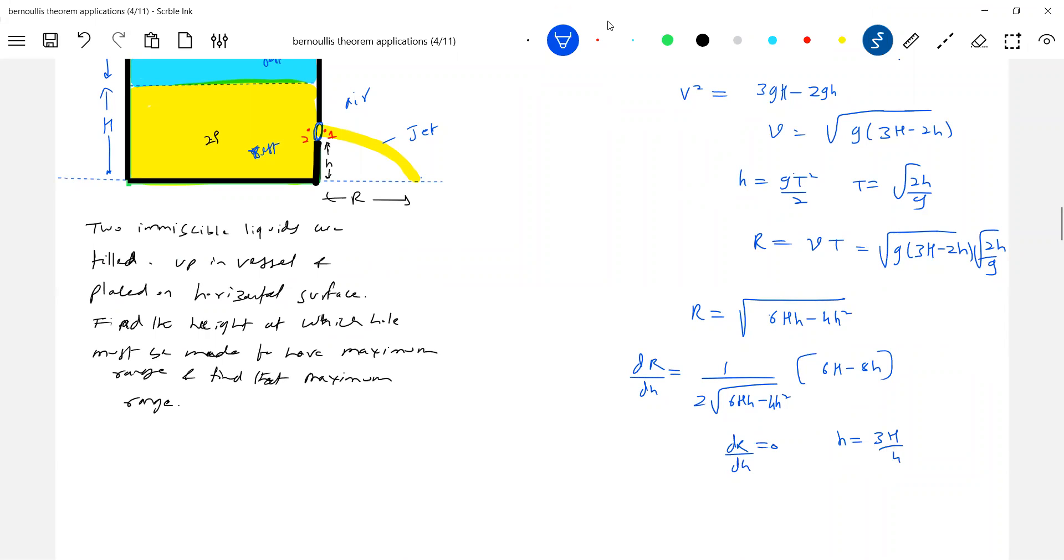It should be at a height 3H by 4. So the hole should be 3H by 4 definitely. What is the height of the denser liquid 2 rho? Where should it be? 3H by 4. Then what is that maximum range of the jet? Let's substitute the value of small h.